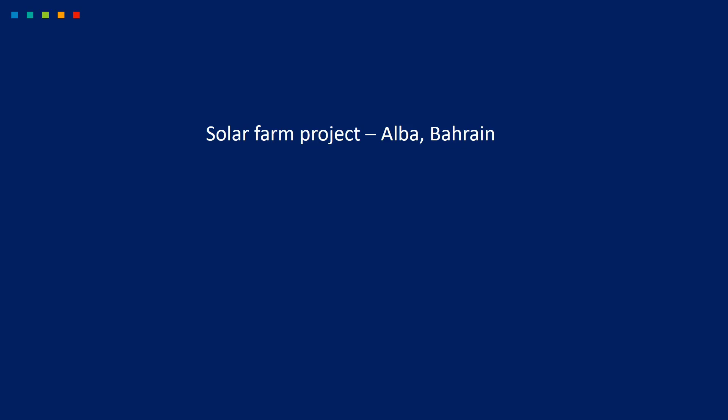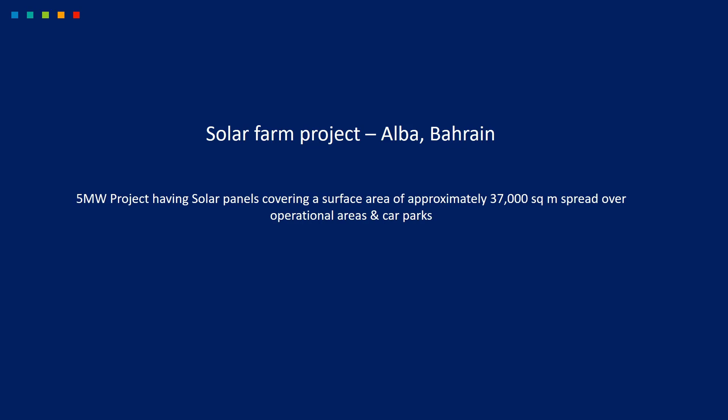Recently, Aluminium Bahrain — also known as Alba Bahrain — launched a solar farm project and invited bids for a 5 megawatt solar farm. It is a 5 megawatt project with solar panels covering a surface area of approximately 37,000 square meters, spread over operational areas and the car parking region. Here at Micro Center, we are currently working to provide different design options to install the solar panels over this specific region.